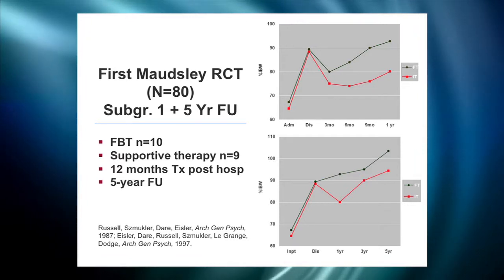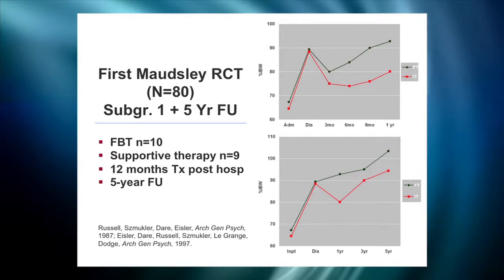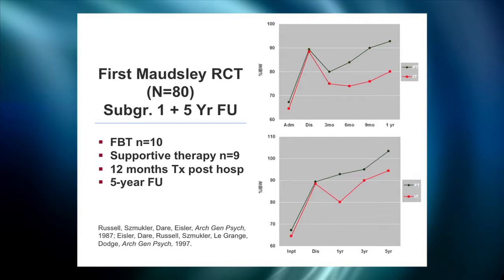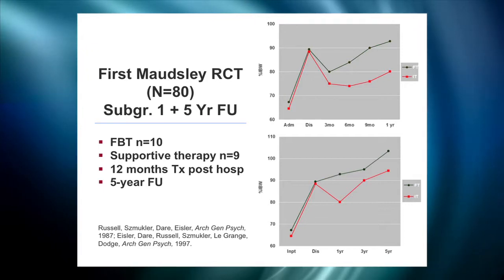At five-year follow-up in an open follow-up design, those patients who were originally in family therapy continued to do pretty well and were weight restored. Those who were originally in individual psychotherapy made some improvements too, but that difference was statistically significant and in favor of family therapy. Jim noted that at the three-year point, it took three years essentially for the patients in individual therapy to reach approximately where they were at discharge, and at the five-year point they were essentially at the same point that the family treatment group was at one year.